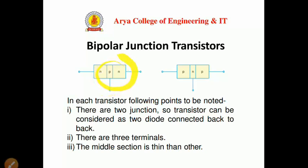Here is the construction diagram, or symbolic diagram, for PNP and NPN transistors. In each transistor, the following points are to be noted: there are two junctions between the two regions. A transistor can be considered as two diodes connected back to back. There are three terminals, and the middle section is a thin layer compared to the others.